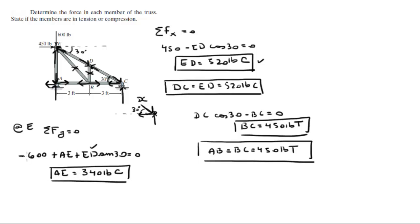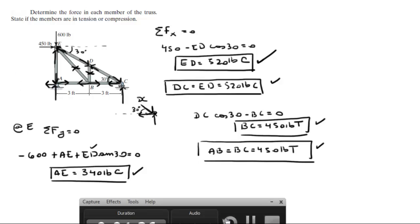Again, if when I built this formula I assumed AE was going up, and if it had come out to be negative 340, then you would just flip the arrow and you should be good to go. So those are the final answers for all the members of the truss, and the two in the middle are zero-force members. Please comment below if you want me to do any problems and I will be happy to help. Thank you.